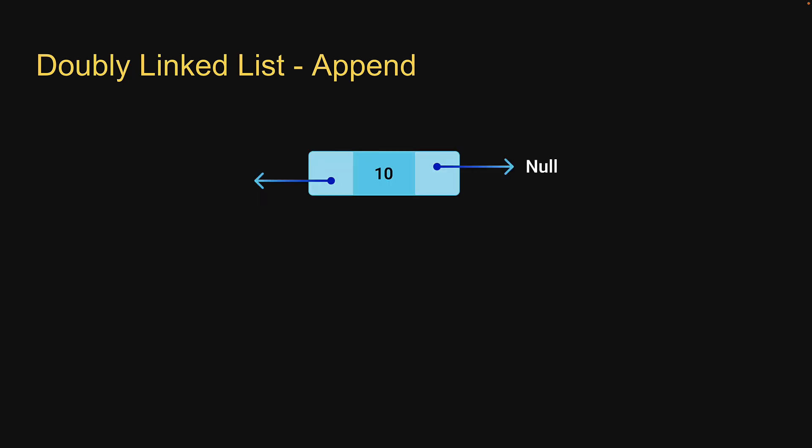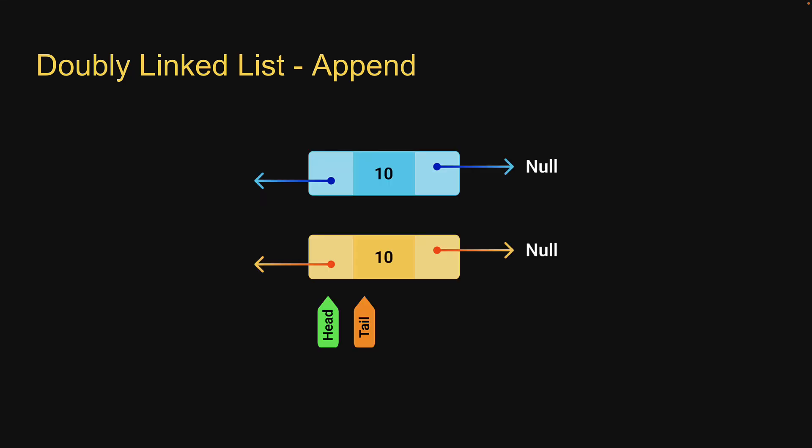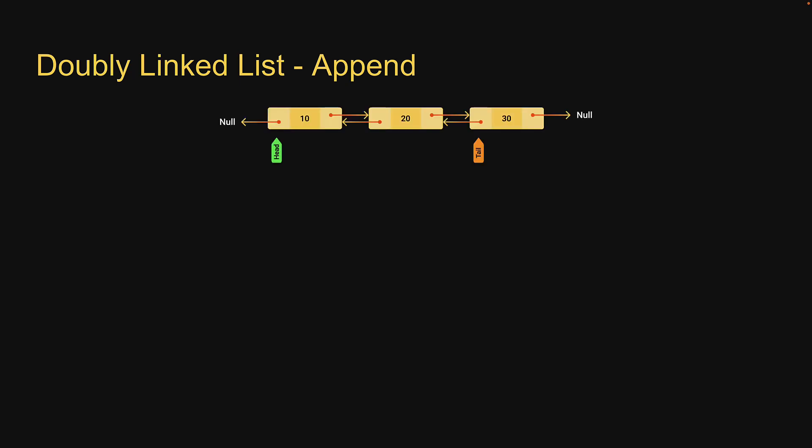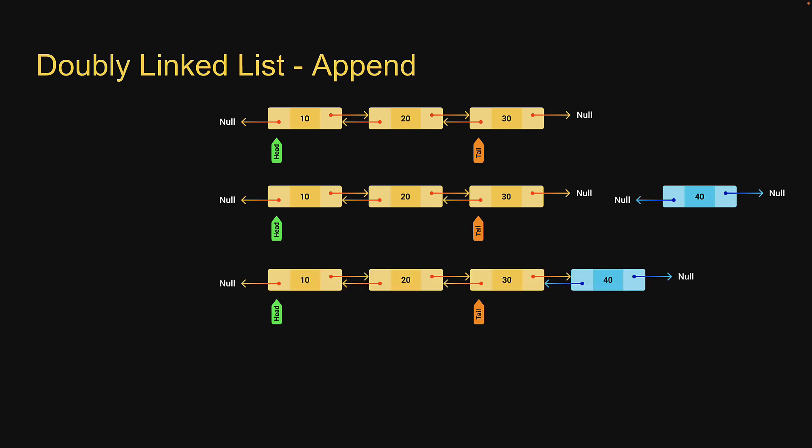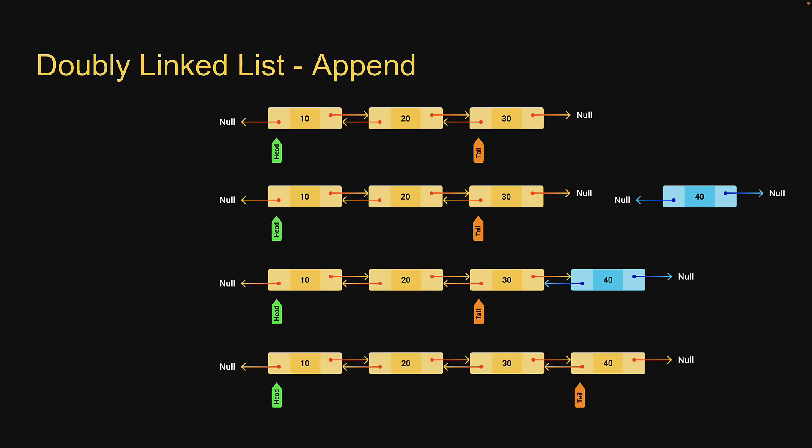Next, let's take a look at append. If the list is empty, the new node is both the head and tail of the list. However, if a list already exists, tail.next will point at the new node and node.previous will point back at tail. Finally, we assign tail to the new node, which is the last node in the updated list.